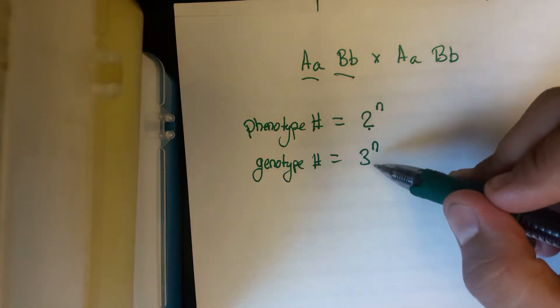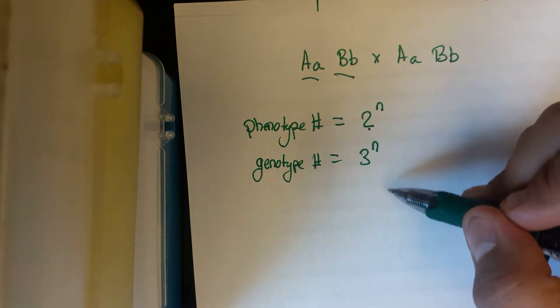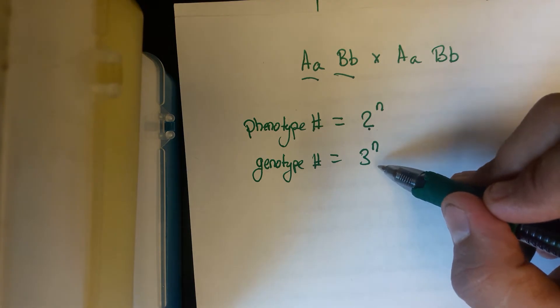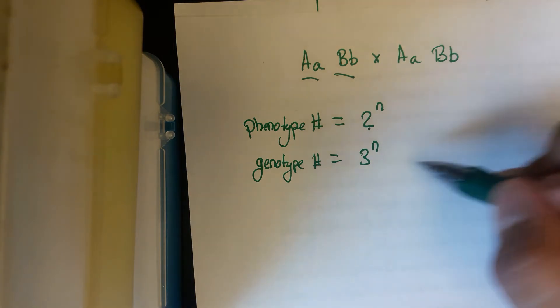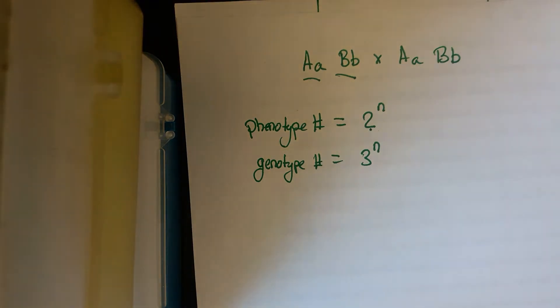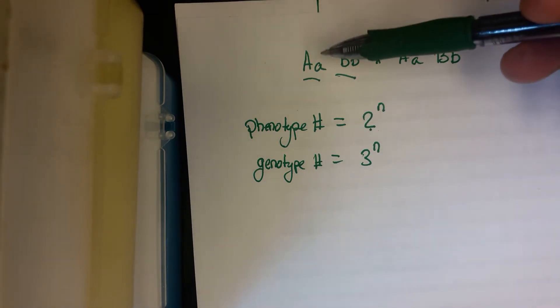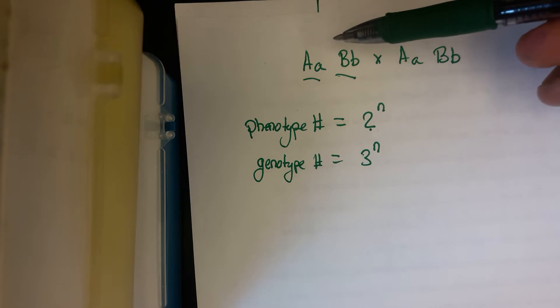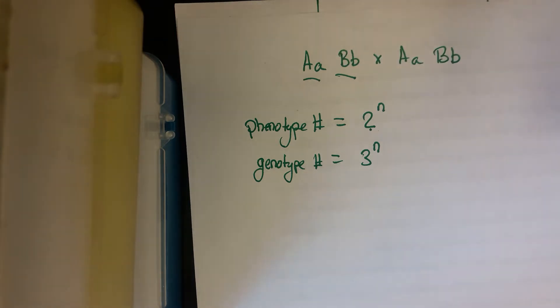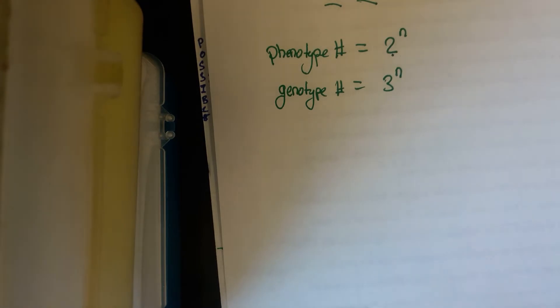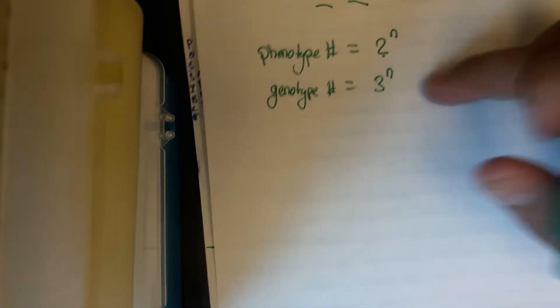And then the genotype, the number of possible genotypes can be derived by this formula where three to the power of n is going to give you the number of possible genotypes. Same idea. In one of my discussions, and actually a few of them, I'd been asked how you alter this when at each individual loci it's not a heterozygote. So we're going to walk through all four possible combinations and see how that affects this formula.